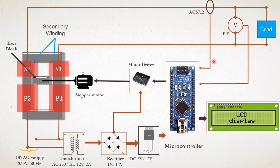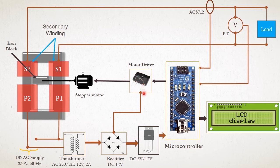For sensing and feedback purposes, we use the ACS712 Hall-effect-based current sensor, and a potential transformer which converts 230V down to 6V, given to the microcontroller. Here we use the L298N as a stepper motor driver, and our stepper motor is the NEMA 17 stepper motor to control the iron block.